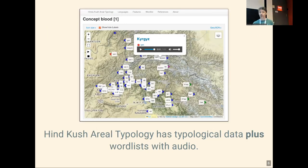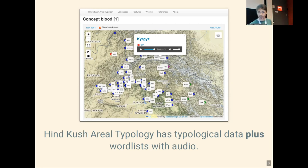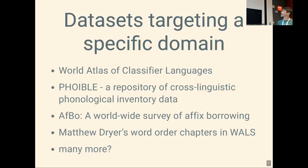The Hindu Kush typological dataset is special in that it also comes with lexical data plus audio, so you can do things like have the words for a certain concept played from all the languages in the sample. Then there are datasets targeting a specific domain — for example, Mark Tang's word atlas of classifier languages, recently published.